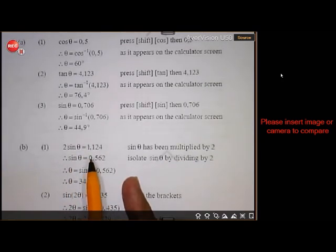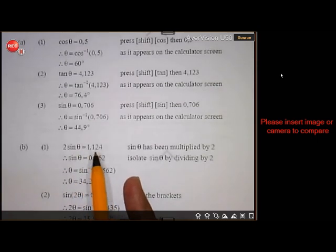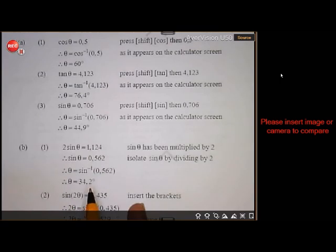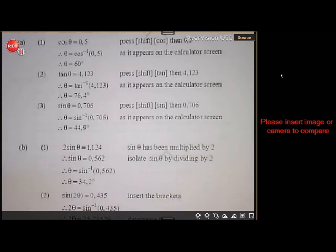Then again, shift or second function sine. Put in this 0.562 on your calculator, and it should get 3, 4, 2. Then the next one, the same. This one here.